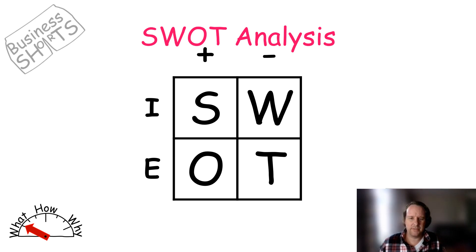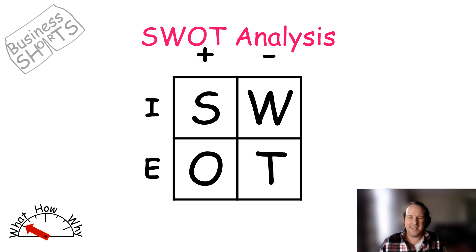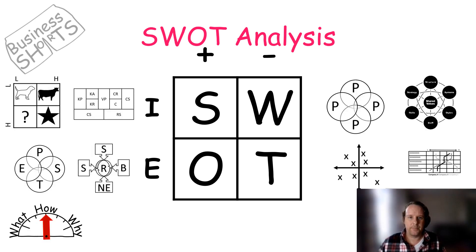It looks at your internal factors and your external factors, and we look at the positives and negatives — hence the little plus and minuses. So if it's an internal positive it's a strength, an internal negative is a weakness, an external positive is an opportunity, and an external negative is a threat.